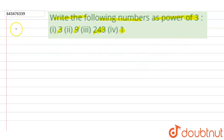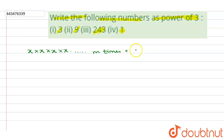We know that if any number is multiplied multiple times — for example, if you take x and x is multiplied m times — then this can be represented in exponential form as x power m, where x represents the number being multiplied and m represents the number of times that number is multiplied.